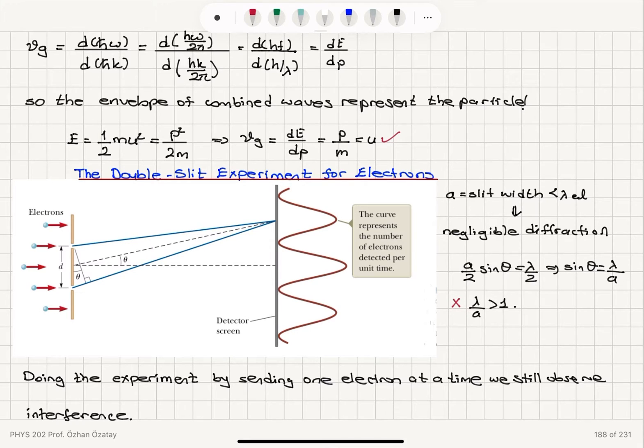So the double slit experiment was performed for electrons, as we said, the Davison-Germer experiment. We can see that we have electrons going through two slits and giving us an interference pattern on the detector screen.